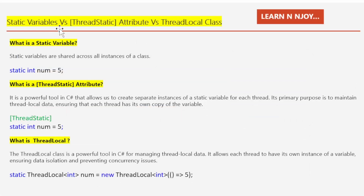Today we are diving into the importance of managing data across multiple threads. Why is managing data across multiple threads so crucial? Let's imagine a scenario where multiple threads are accessing and modifying the same piece of data simultaneously. Without proper management, this can lead to data corruption, race conditions, and unpredictable behavior. This is where static variables get interesting in multi-threaded environments.